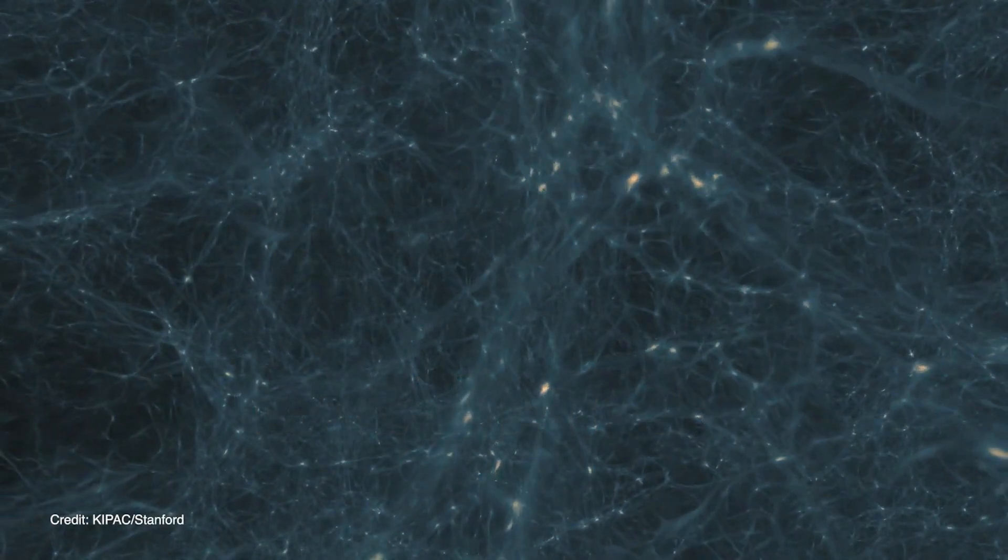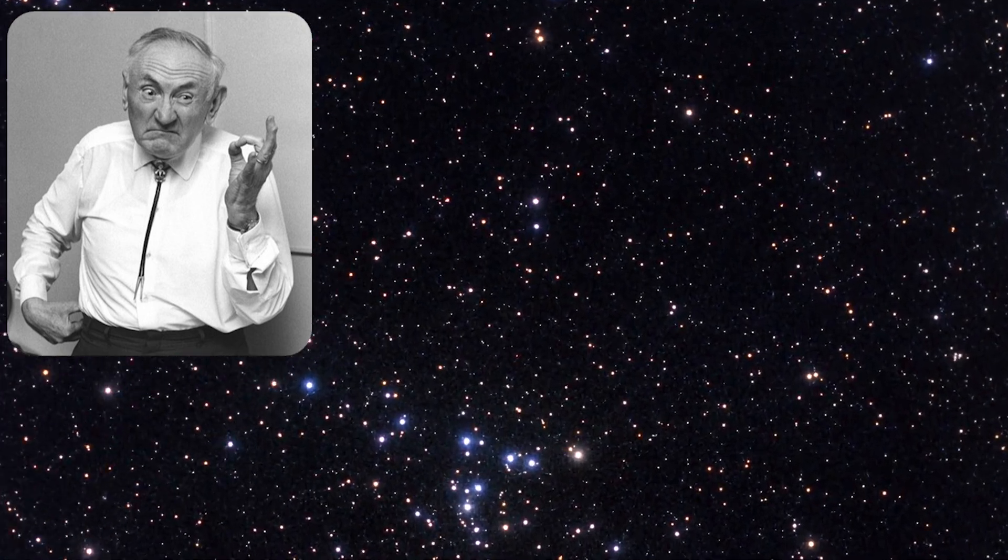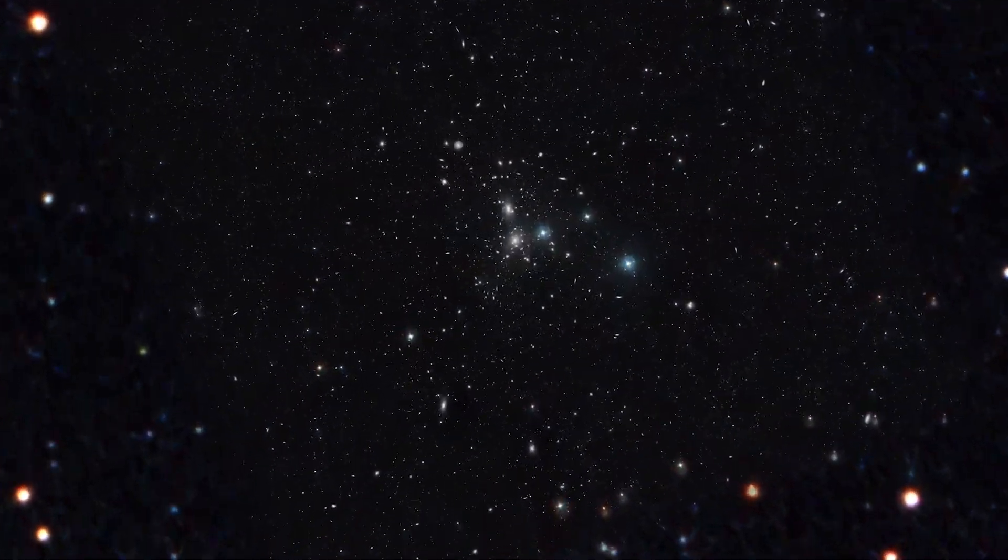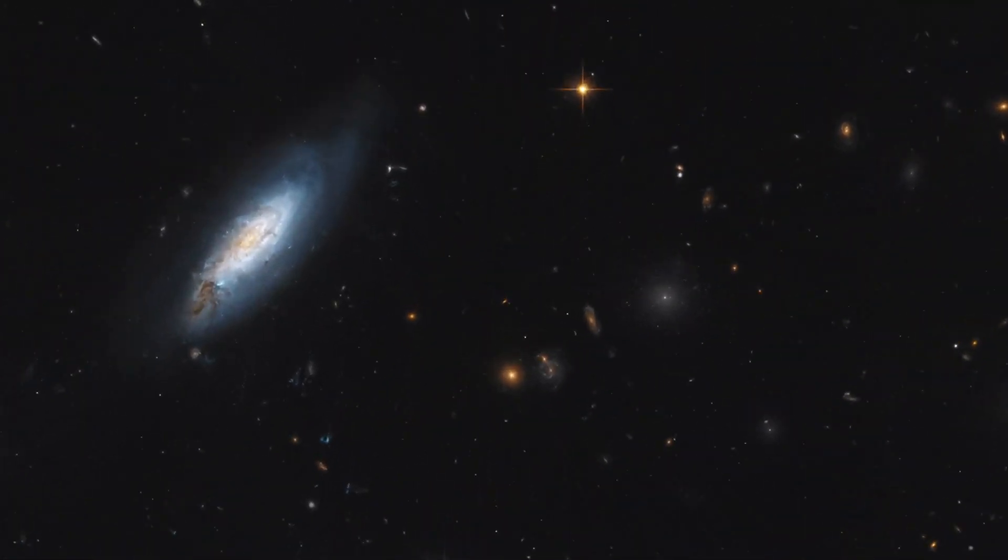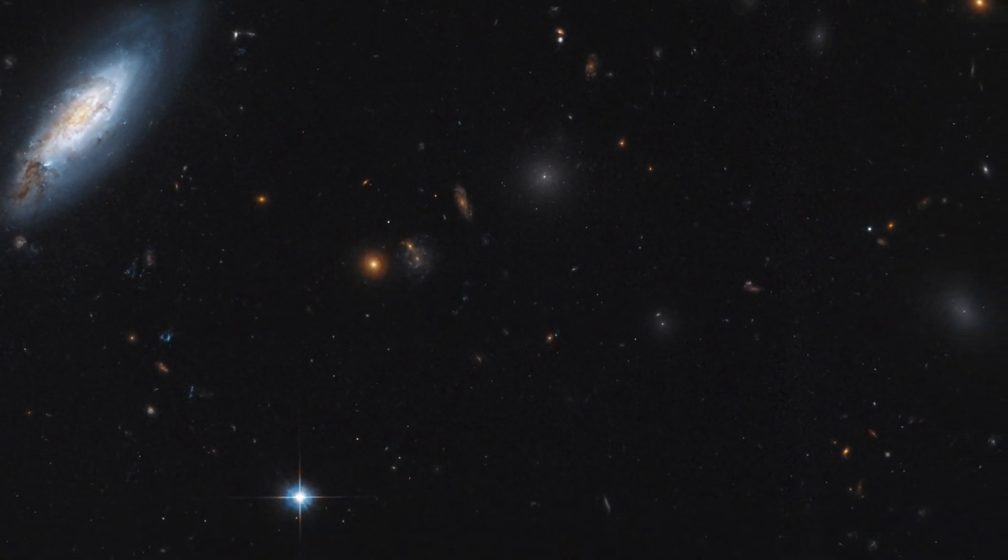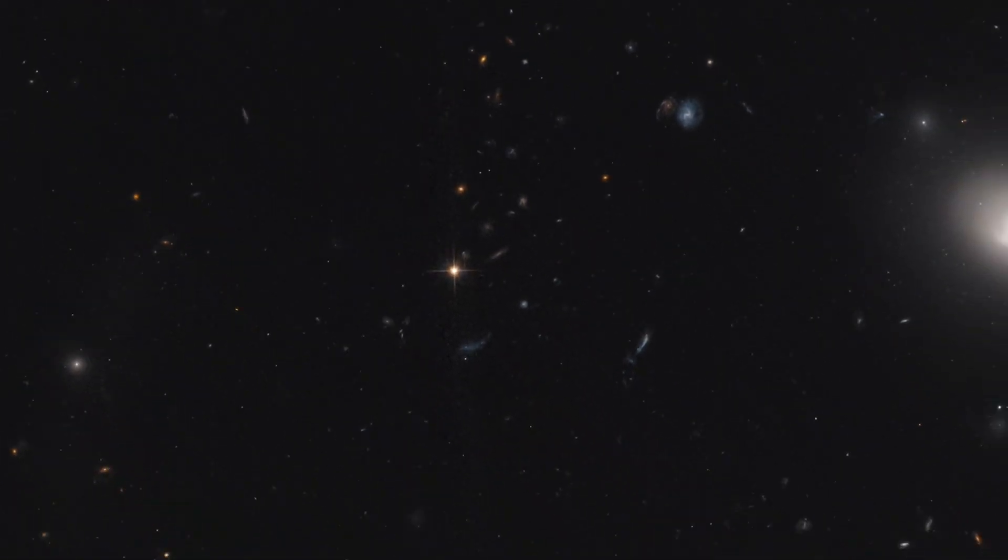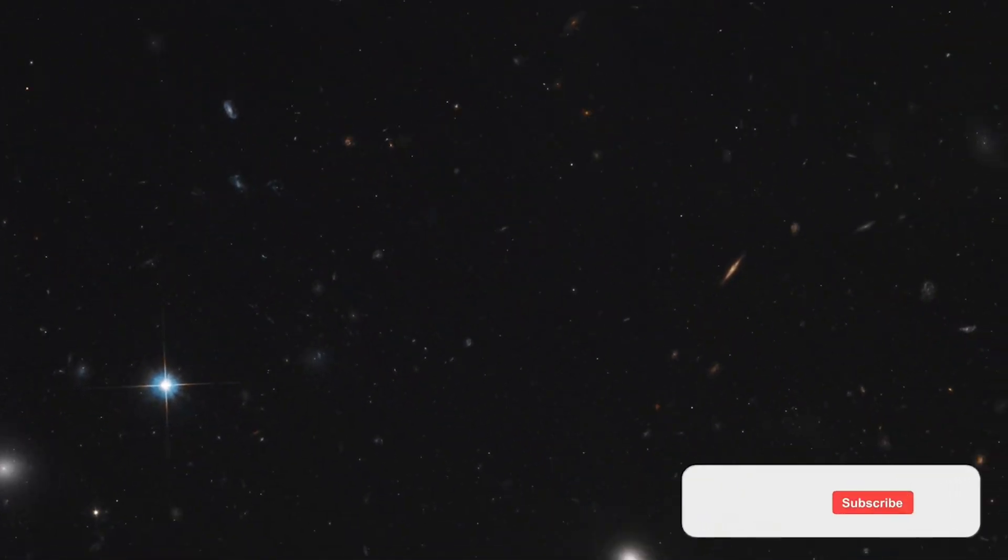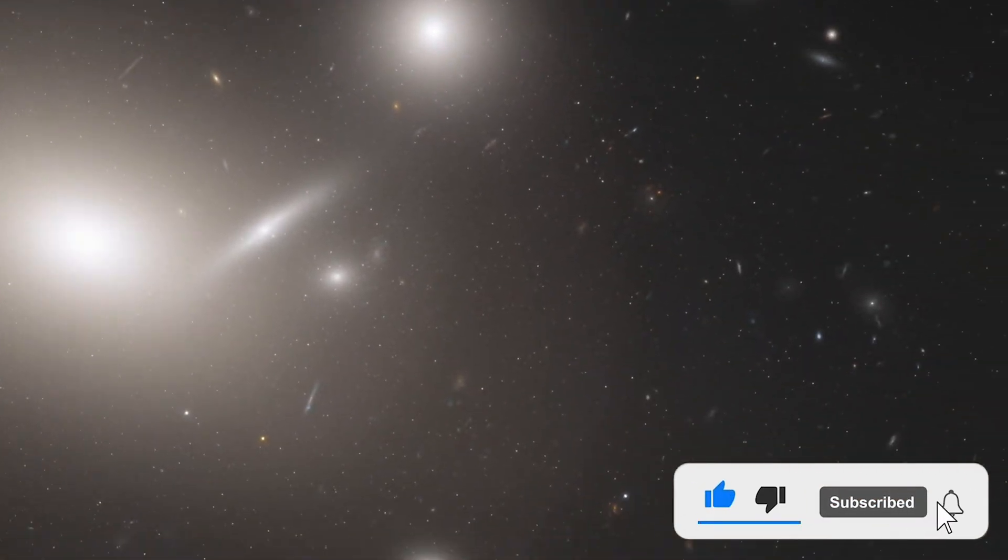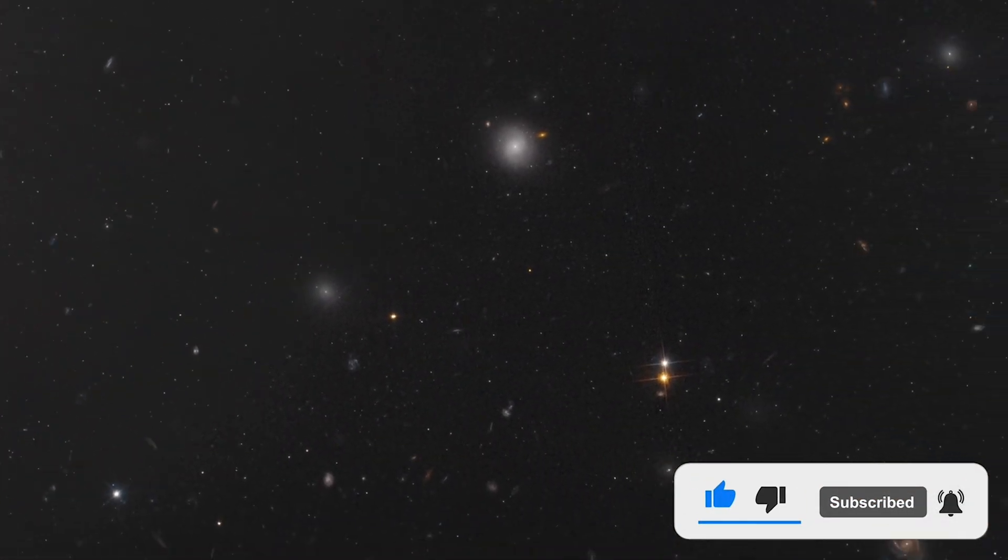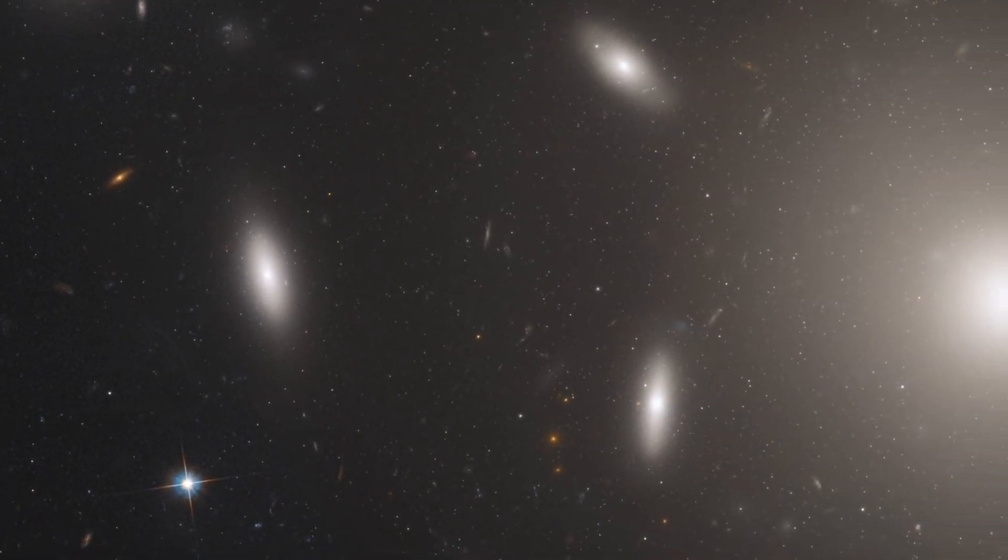In 1933, a Swiss astronomer, Fritz Zwicky, observed a unique mass problem in the coma cluster. He saw the existing visible mass of the whole cluster was too low to gravitationally lock more than 1000 galaxies in the cluster. This cluster needed 100 times more mass to lock these galaxies within. This was the first clue of dark matter.